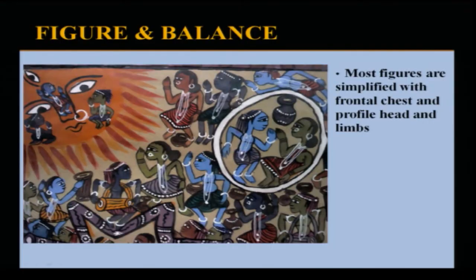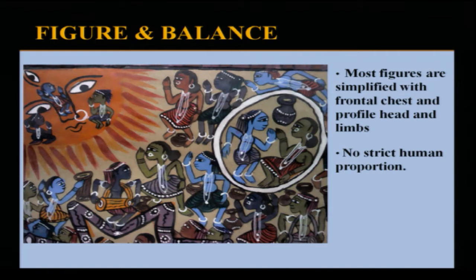Most figures are simplified and resemble the trend found in classical Egyptian or Mesopotamian figures. Although very simplified, they have a frontal chest and torso with a profile view of the face and feet. Their human proportion is not strict — for example, here the leg is much smaller, almost equal to that of a head, and here the leg is about twice the proportion of the head. They don't stick to strict human proportion; rather, they change it according to the placement and importance of the figure.